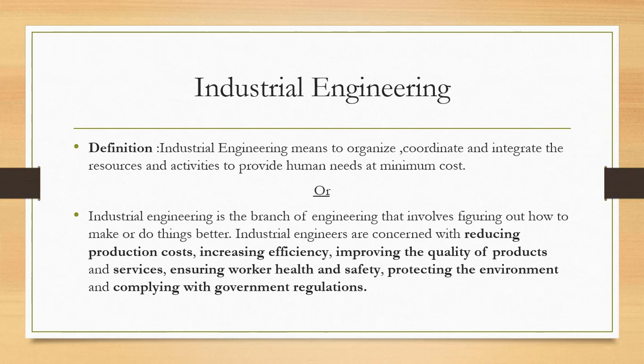So the function of industrial engineering is to organize, coordinate, and integrate all the resources and all the activities in the industry, and it is done with minimum cost. We can also define industrial engineering as the branch of engineering in which we reduce production cost, increase efficiency, improve the quality of products and services, ensure the health and safety of workers, protect the environment, and comply with government regulations.